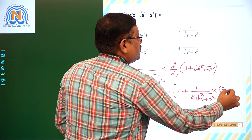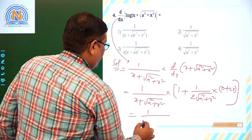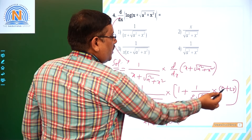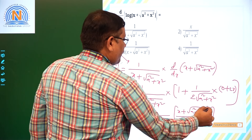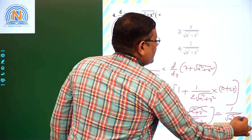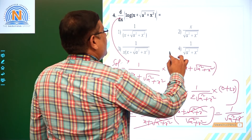Putting it together: 1 / (x + √(a² + x²)) times (1 + x / √(a² + x²)). Adding inside the bracket: (√(a² + x²) + x) / √(a² + x²). Multiplying: (x + √(a² + x²)) cancels in numerator and denominator. We end up with 1 / √(a² + x²). So dy/dx = 1 / √(a² + x²). It is a problem based on the chain rule.